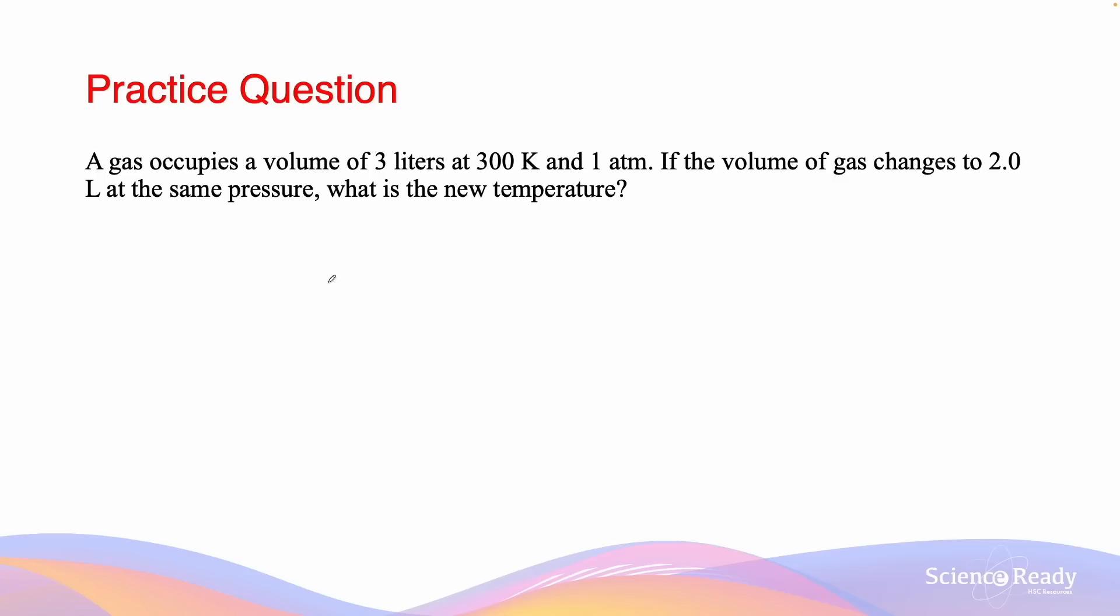This next question reads, a gas occupies a volume of 3 liters at 300 Kelvin and 1 atmosphere. If the volume of gas changes to 2 liters at the same pressure, what is the new temperature? So importantly, this question tells us that the pressure remains the same after the volume of gas changes. This is important, as Charles's law is not applicable when pressure changes in a system.